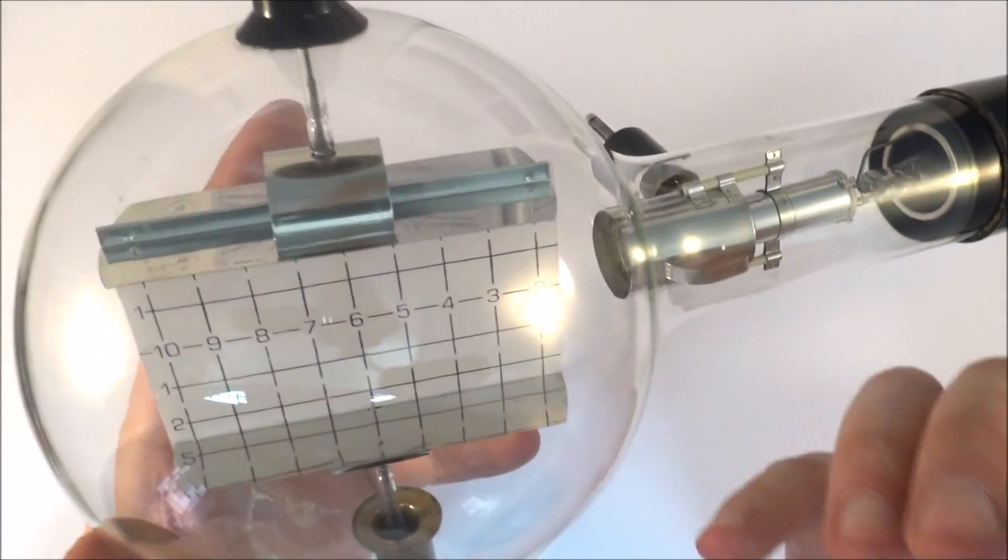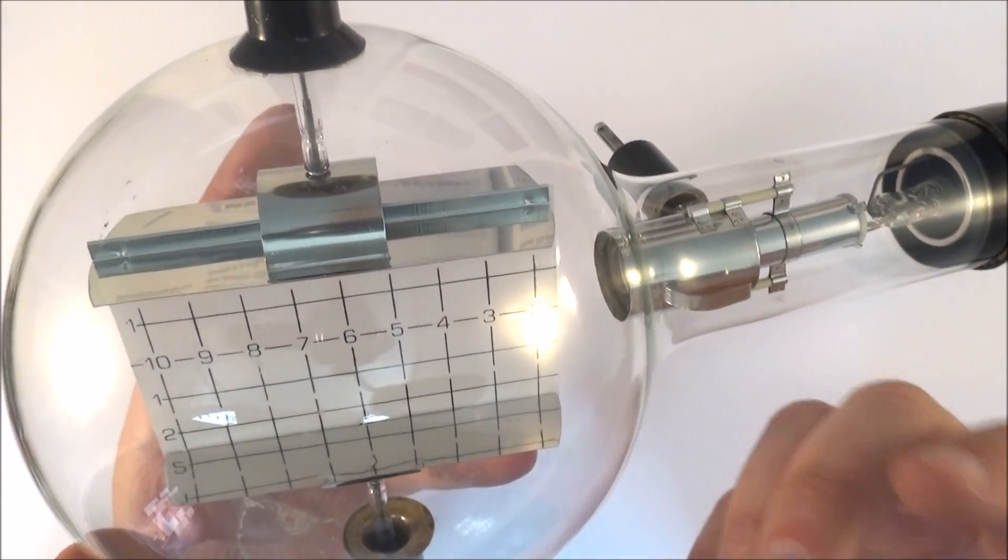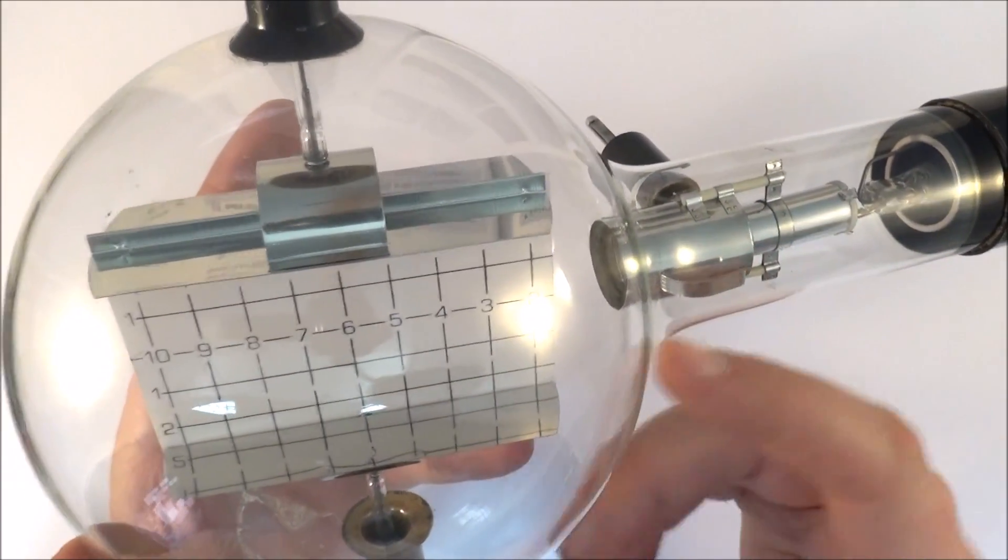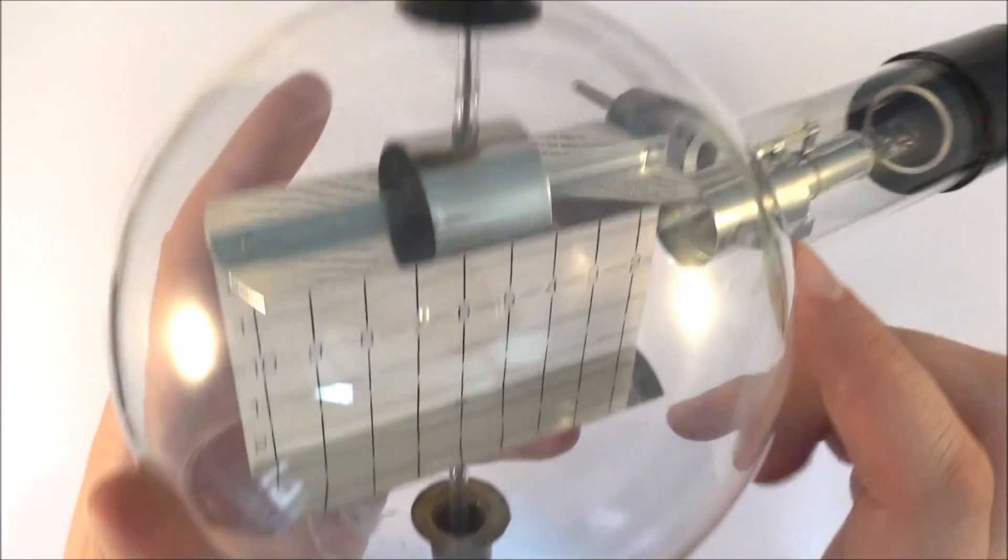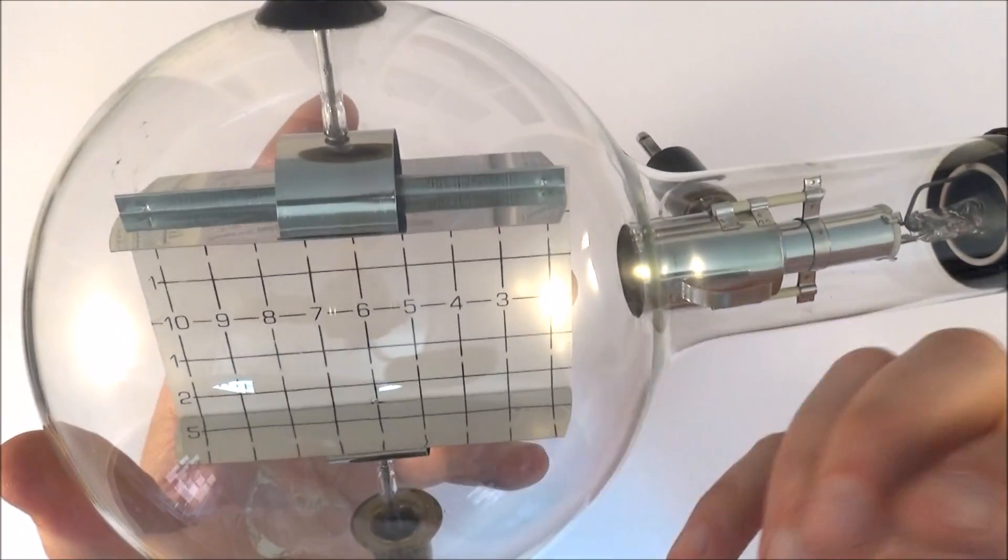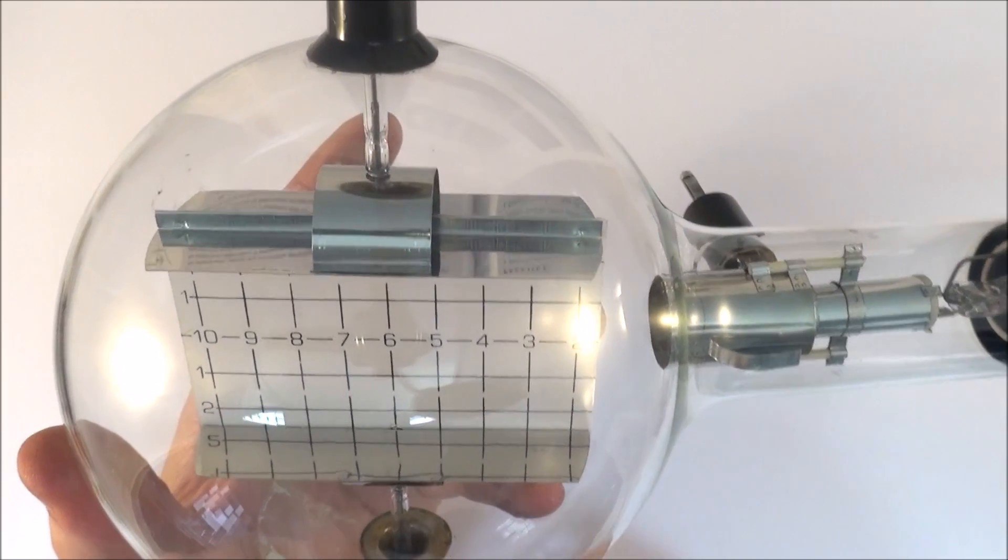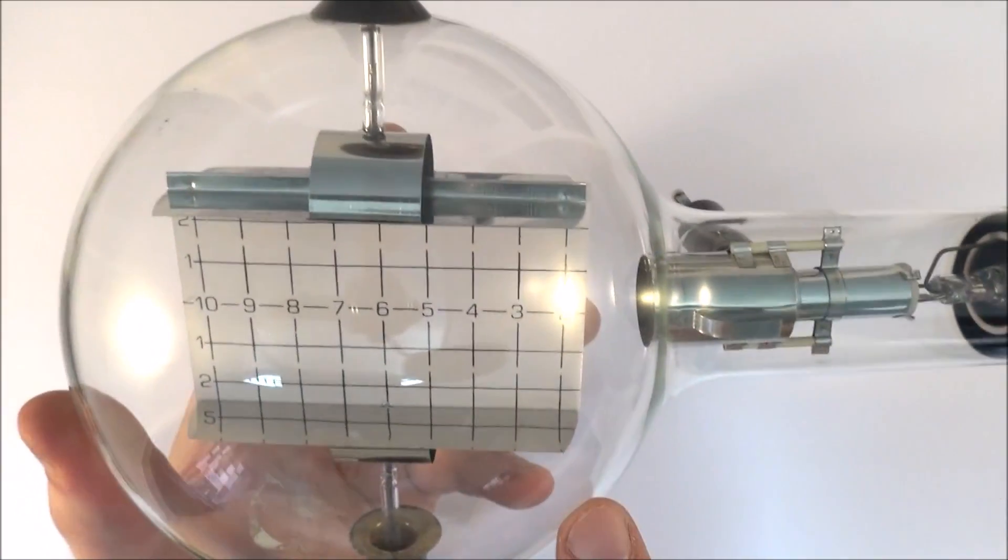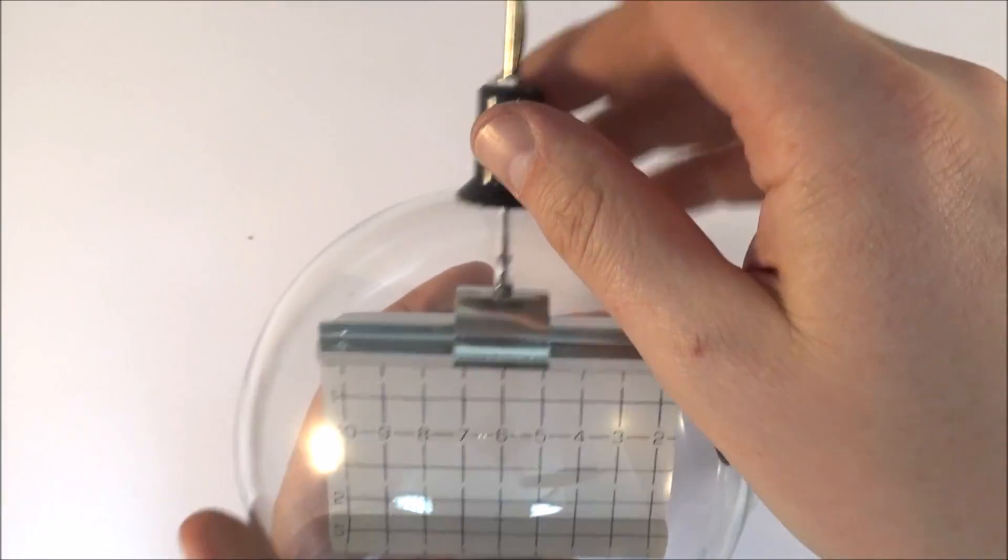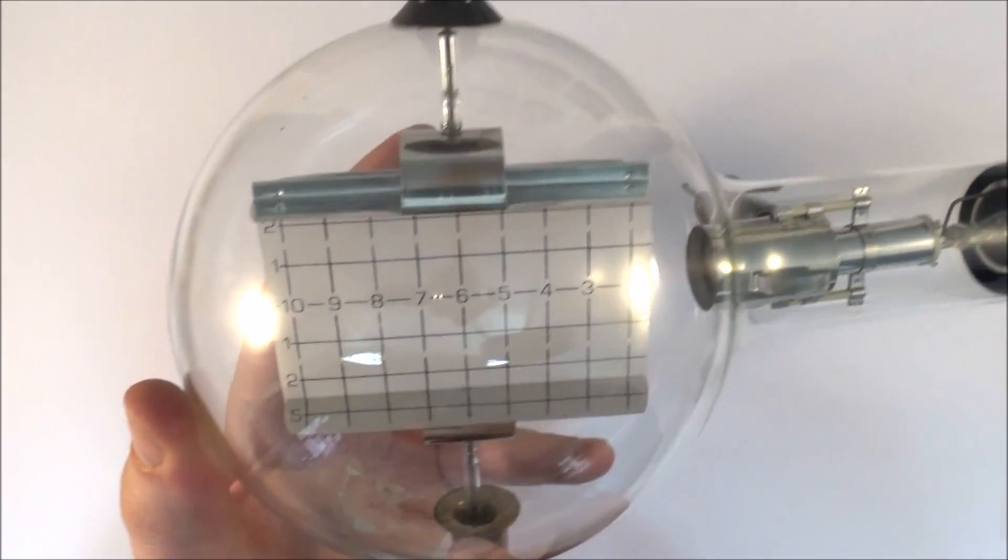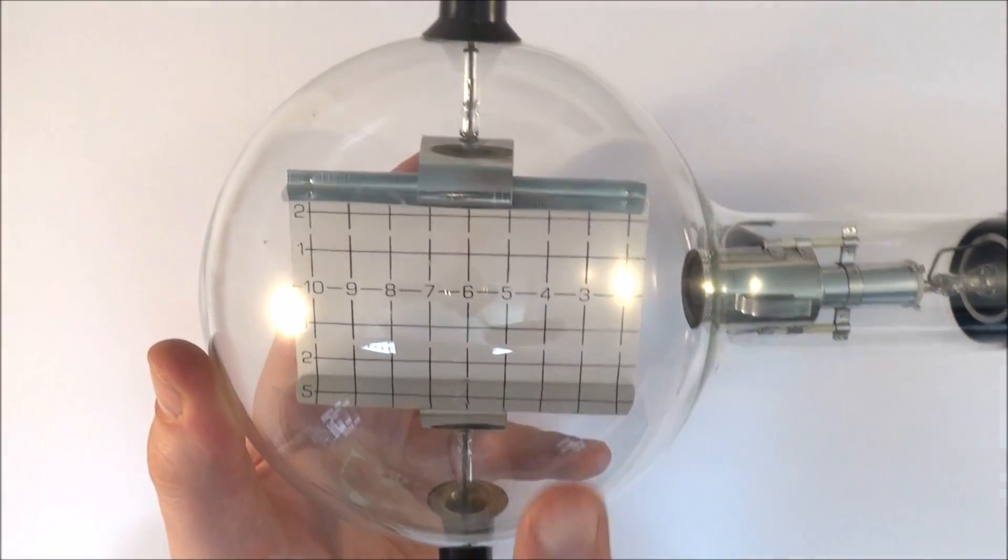This deflection tube is used to measure the charge to mass ratio which is E over M and we can do that by looking or by applying two fields inside it. First of all we can apply an electric field and we do that vertically up and down by perhaps having one of these at a positive potential and so we basically have this up and down electric field.